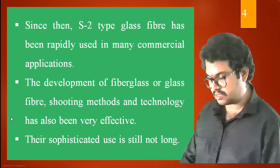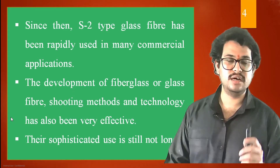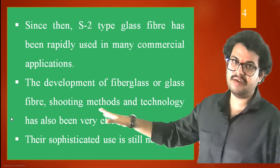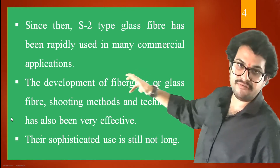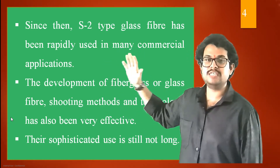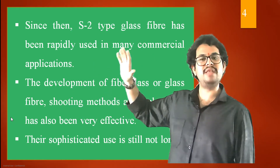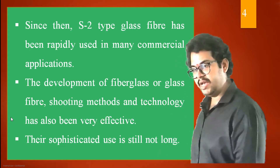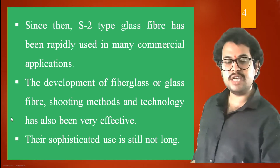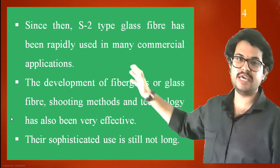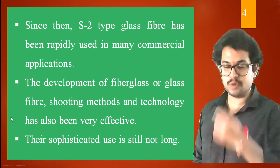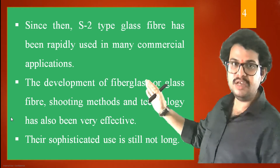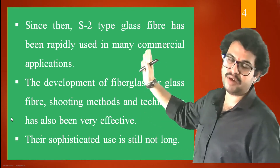We have already discussed in the previous class about high strength, low density fiber — glass fiber S2 and related types. Since S2 was evolved from S glass, that S2 glass fiber has been very rapidly used in many commercial applications. The development of fiberglass shooting methods and the technology has also been very effective, which is why S2 fiberglass was so rapidly adopted.